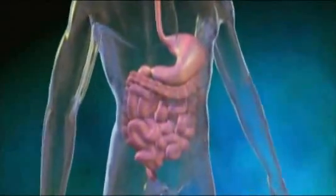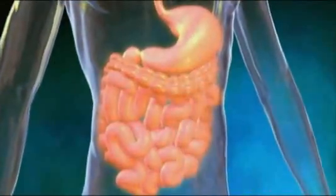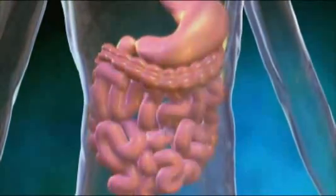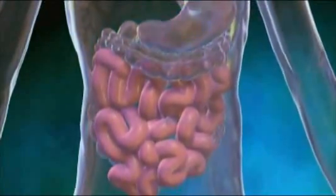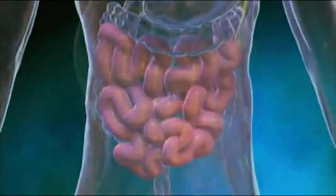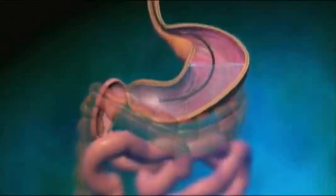The small intestine is part of the gastrointestinal tract, the GI tract. It is approximately 20 feet long and is the site where most digestion takes place. A standard endoscope may be used to examine abnormalities of the small intestine, such as tumors and bleeding.